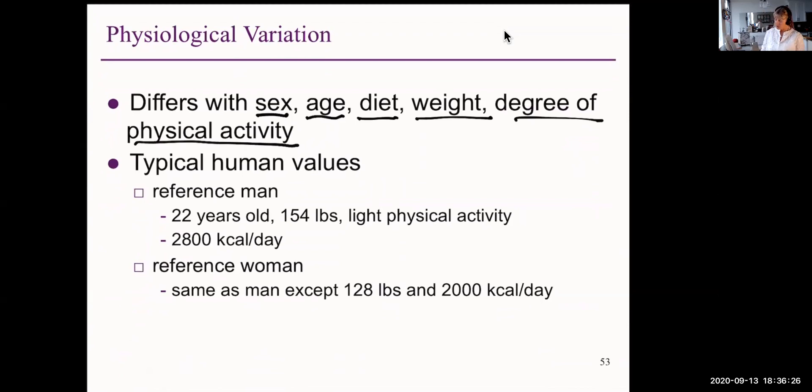The typical human values that are used for reference in order to compare people to is a reference man, 22, 154 pounds, light physical activity, 2,800 calories consumption a day. A reference woman, same as a man, except 128 pounds, and 2,000 kilocalories a day.